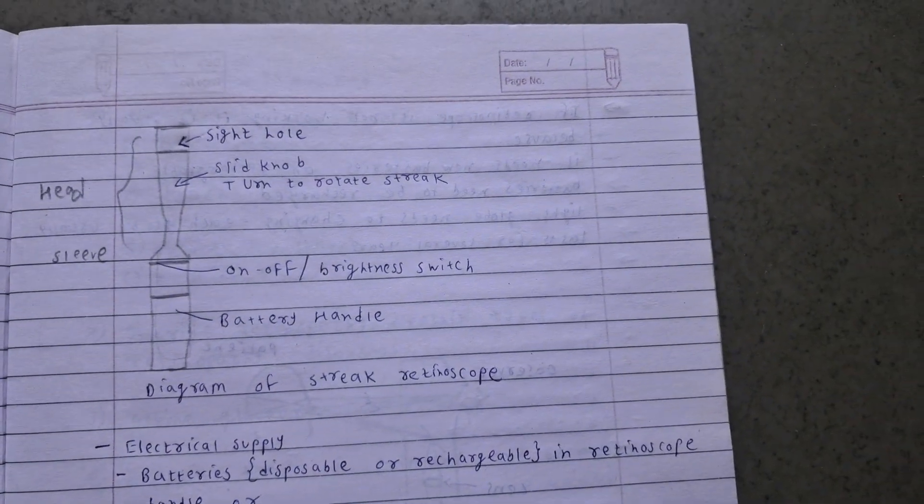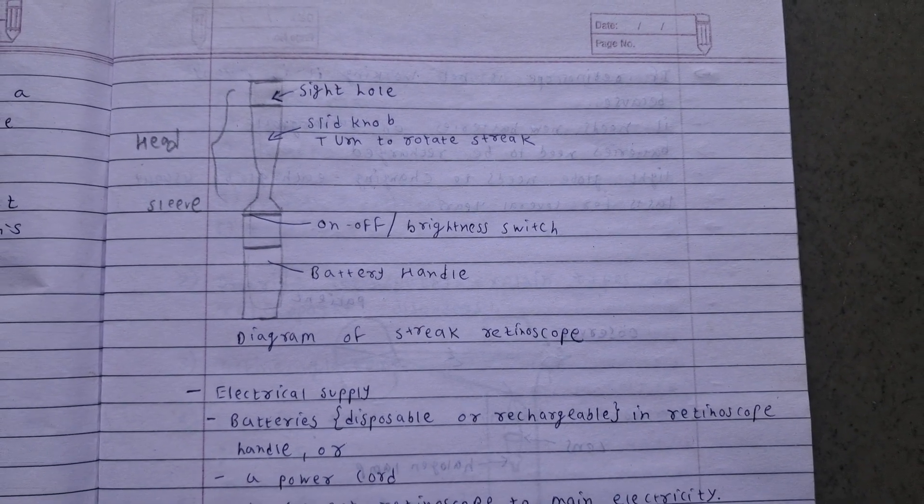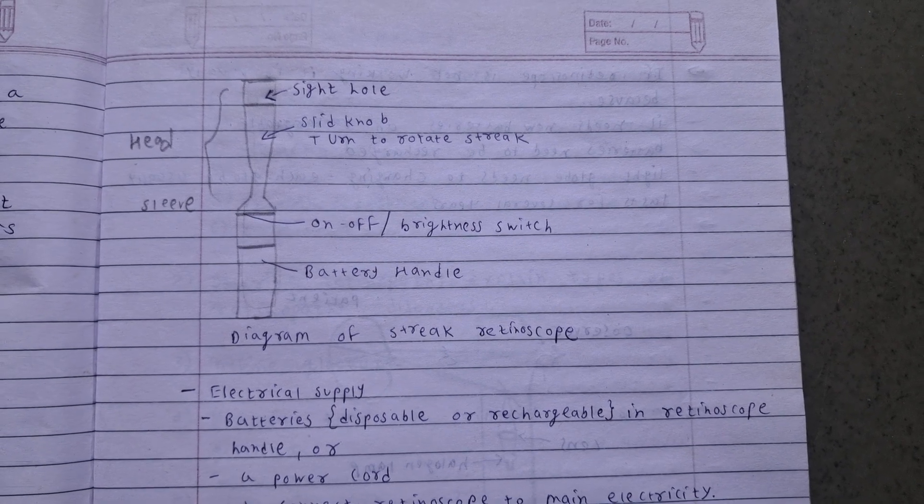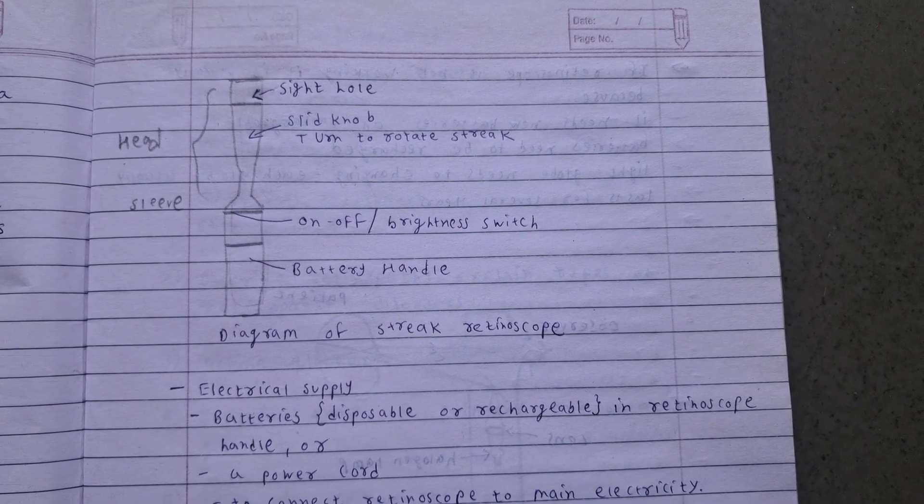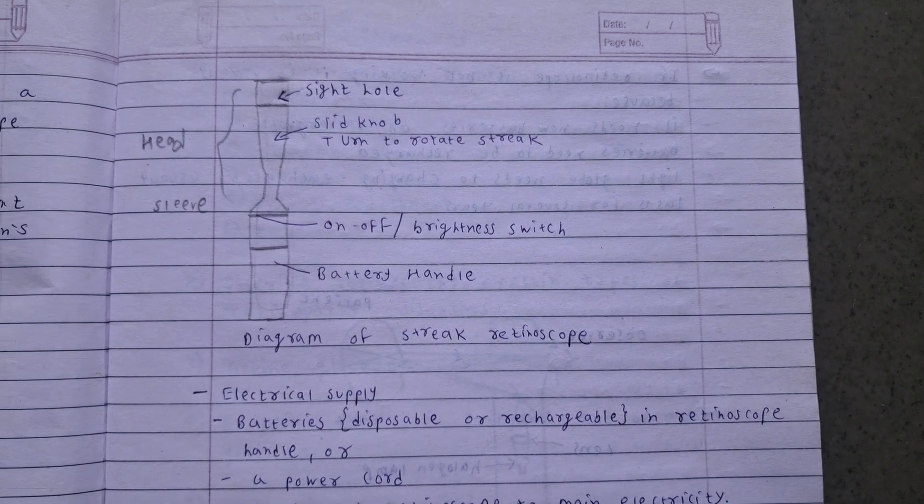Diagram of streak retinoscope. Upper side is called head, middle is slide, and lower is handle. Head upper side has a sight hole. Slide knob turns to rotate the streak.